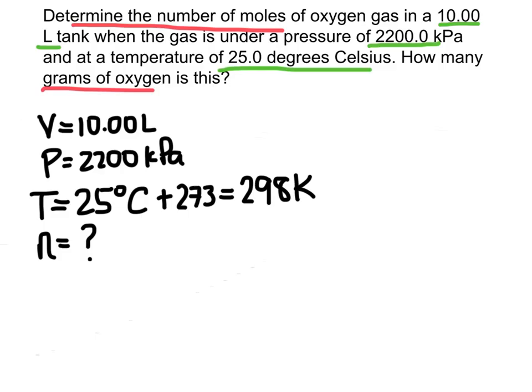Now I can go ahead and put my equation in. And I'm using the ideal gas equation because I know volume, pressure, temperature, and I want to find number of moles. I'm going to rearrange this to solve for number of moles. So I can divide both sides by RT, and that's going to get rid of RT on that side, leaving me with number of moles.